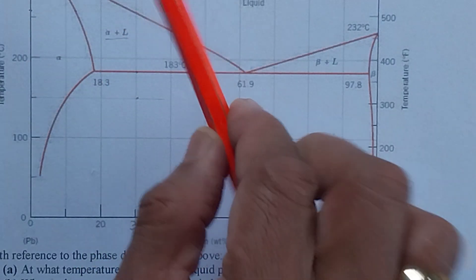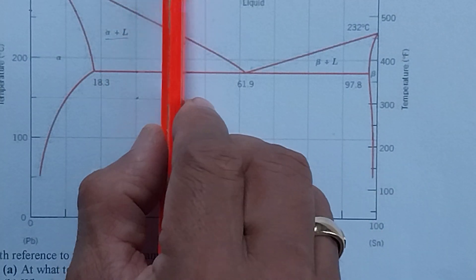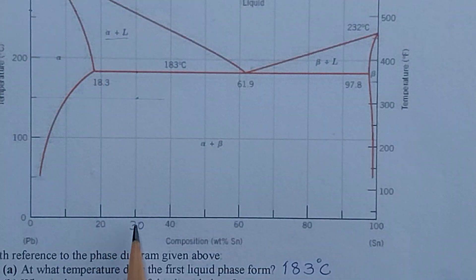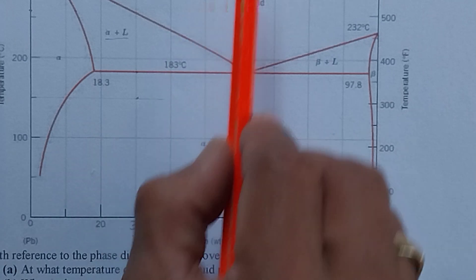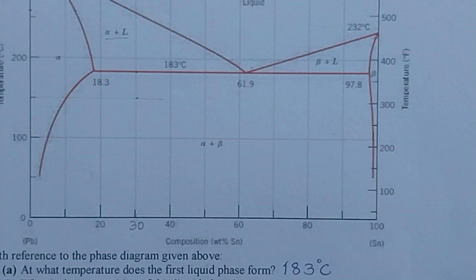So when we talk about a 30 weight percent tin, that number is here. So we have here 10, 20 and 30. I have written 30 here. So 30 weight percent tin means that weight percent tin is given 30 percent, the remaining 70 percent is obviously lead.